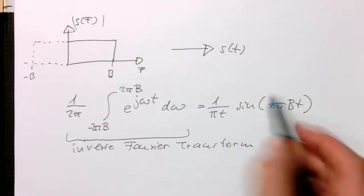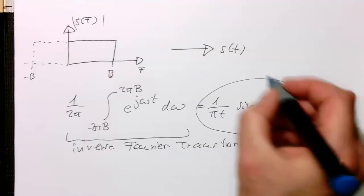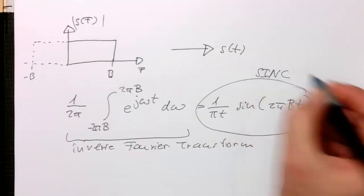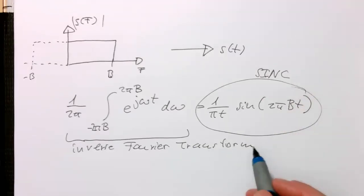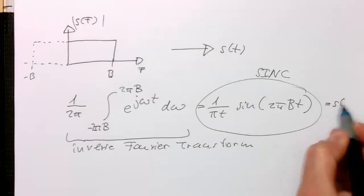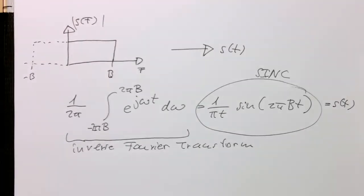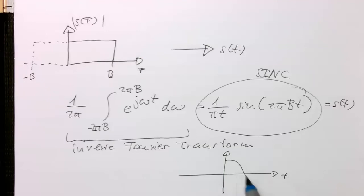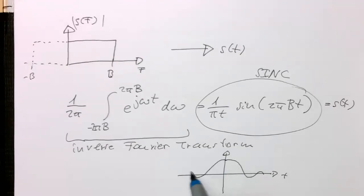And so what we are getting out here is our sinc function. So this sinc function now, this gives us here this S of T. So our symbol. So how does it look like? So if we sketch this here, probably most of you have seen that. So a sinc function looks like that. Yeah, so something like a damped sine wave. So that this has these wiggles to both sides here.